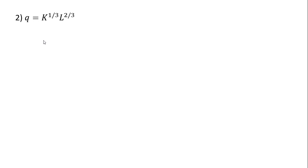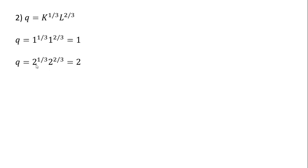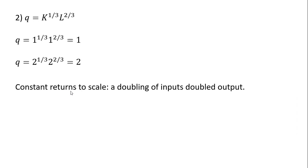Here's another production function. Again, we'll pick an input mix where K equals 1 and L equals 1. Plugging that into the production function and solving, output is 1. What happens if we were to double that input mix? Plugging 2 in for K and 2 in for L, output is now 2. We doubled our inputs and output exactly doubled — that is constant returns to scale.